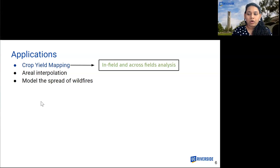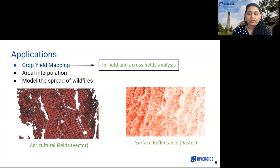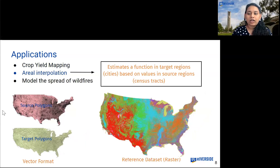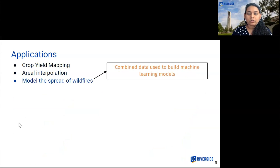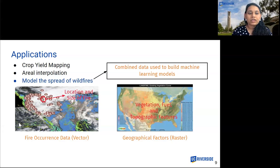The application of crop field mapping performs in-field and cross-field analysis. To do so, it requires combining agricultural fields available in vector format with surface reflectance values available in raster format. The application of error interpolation estimates a function in target regions based on values in source regions. The source and target regions are available in vector format and are combined using a reference dataset available as a raster. The application of wildfire modeling uses data to build machine learning models to model the spread of wildfire, combining fire occurrence data in vector format with rasters representing geographical factors. Since the representations of raster and vector data are so different, these applications need to convert them before combining them, and this conversion process is computationally expensive and hence a bottleneck.